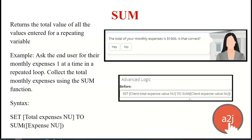Sum is the last function we'll cover today. Sum returns the total value of all values held by a repeating variable. For example, if you've asked the end user for their monthly expenses one at a time in a repeat loop, you sum the expense variable to set a new variable, total expenses. Then you can display 'your total monthly expenses are $1,600 — is that correct?' Based on their answer, you can go back and correct values, add to them, delete from them, or move on to the next set of questions.